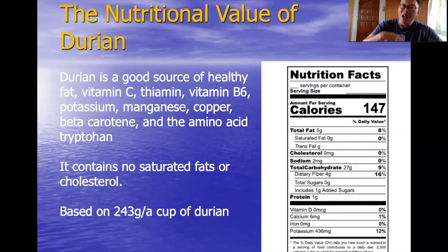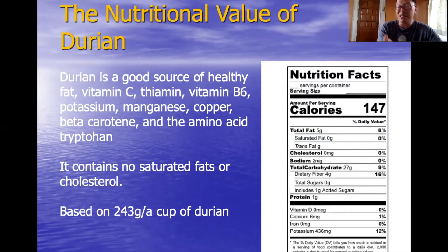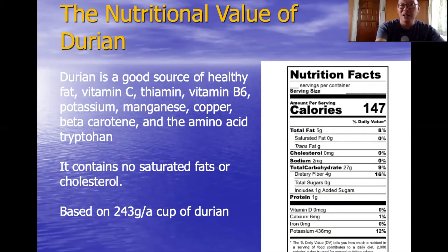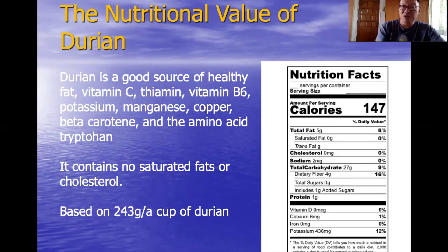This nutritional facts chart is based on one cup of durian, roughly about 243 grams. This serving contains 147 calories, 5 grams of fat — equivalent to 8% of daily value based on a 2000-calorie daily intake — zero saturated fat, zero cholesterol, low in sodium at only 2 milligrams, and 27 grams of carbohydrates, so it is actually quite low to moderate in terms of carbohydrate content.